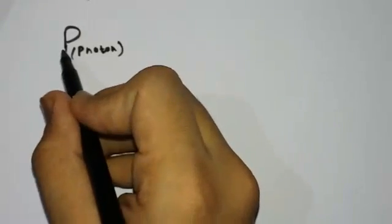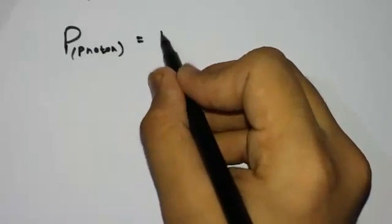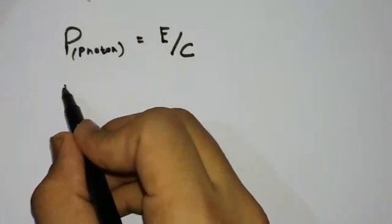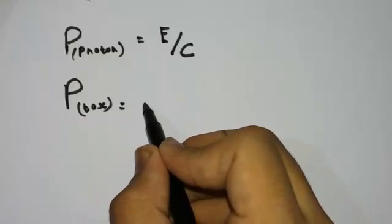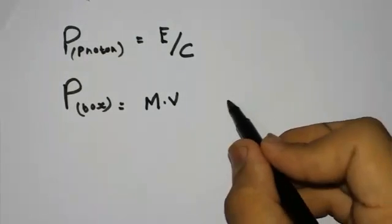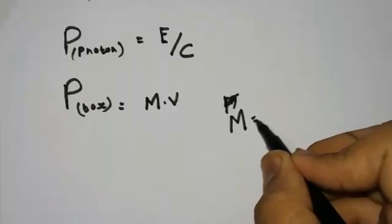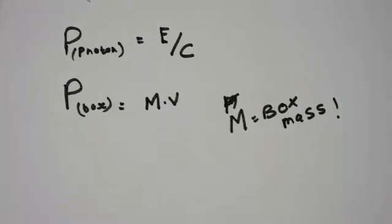According to Maxwell, the momentum of a photon equals E divided by C. And the momentum of the box equals M times V, where capital M is the mass of the box.